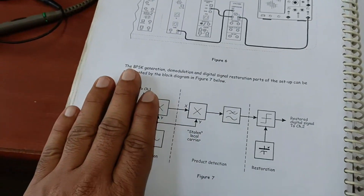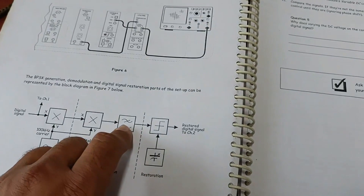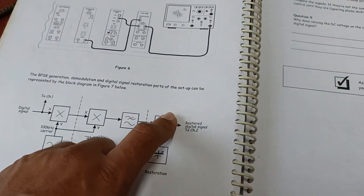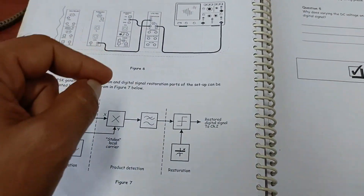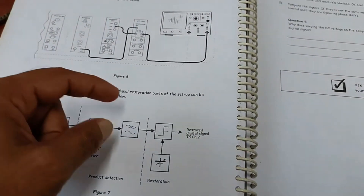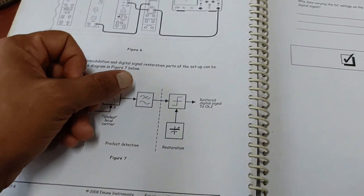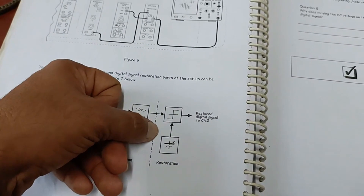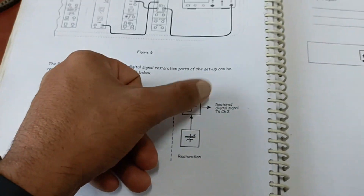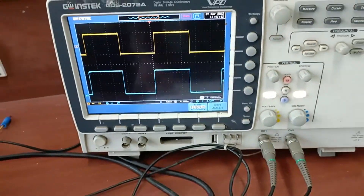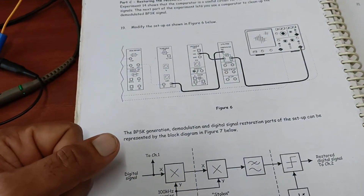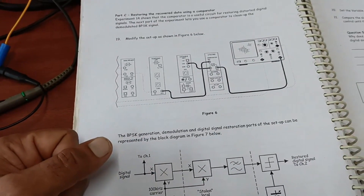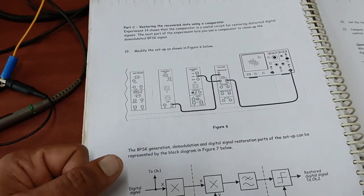After the low-pass filter, the signal is passed to the comparator. The threshold voltage is set: if the signal is greater than the threshold voltage it produces a one, and if less than the threshold voltage it produces a zero. By using this comparator we have recovered the original signal, as seen on the CRO. This was the BPSK experiment — I think it is the easiest experiment since you already know about BPSK. Thank you.